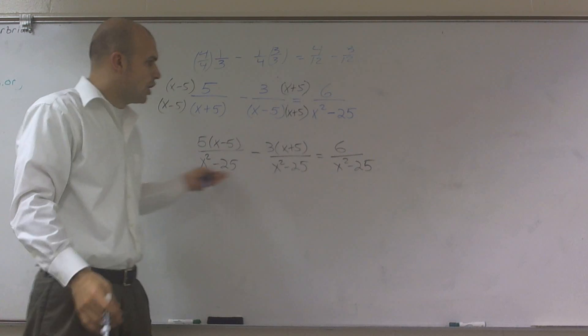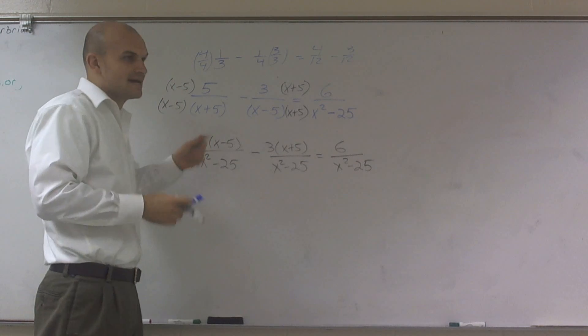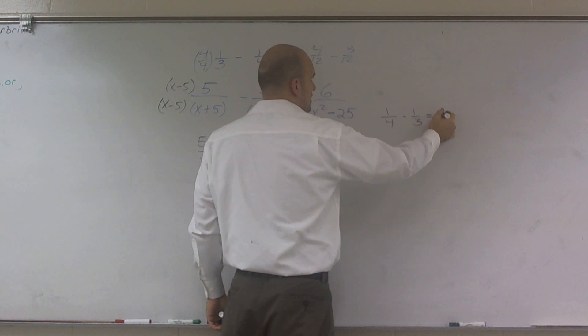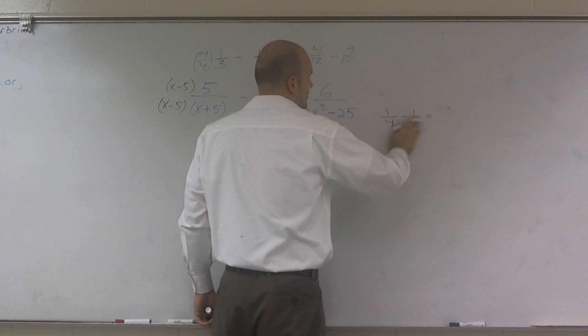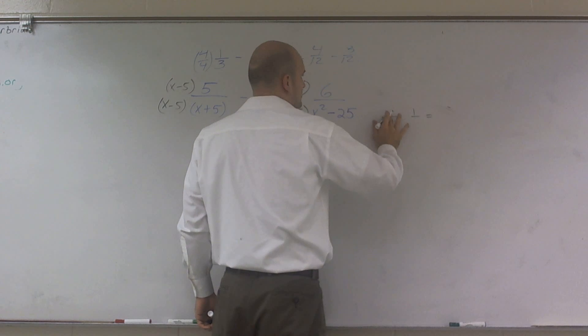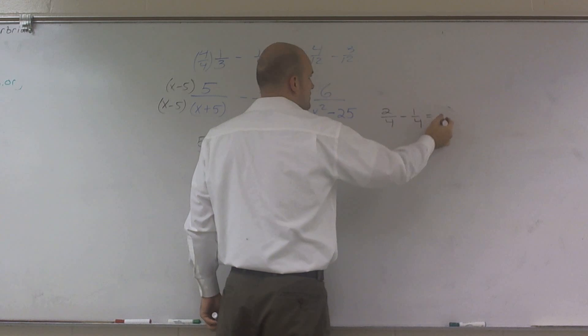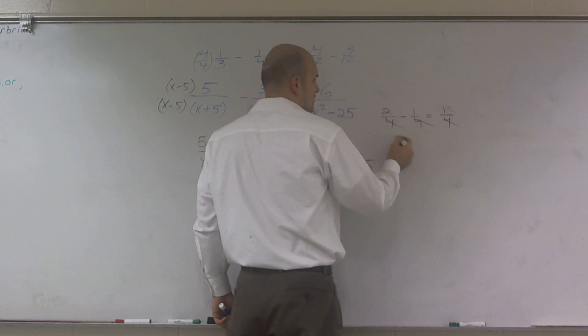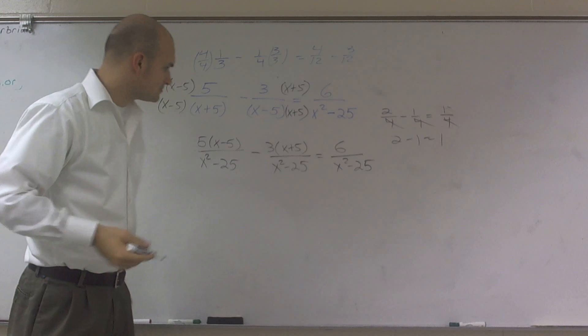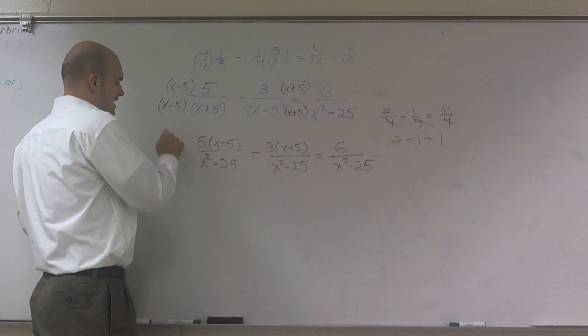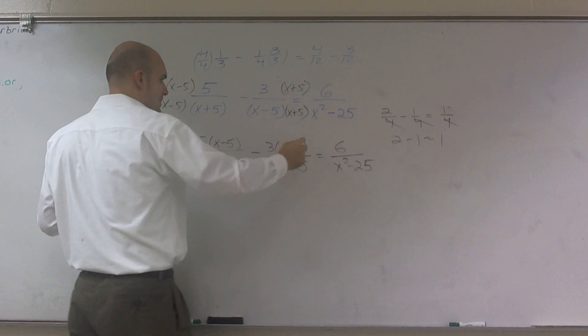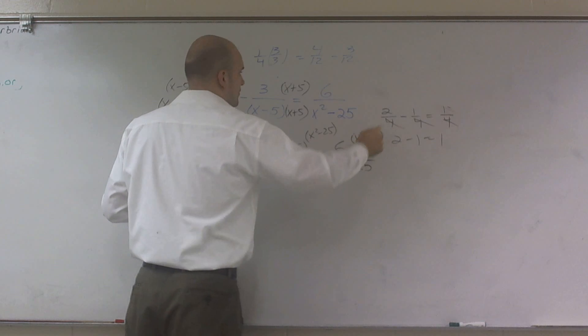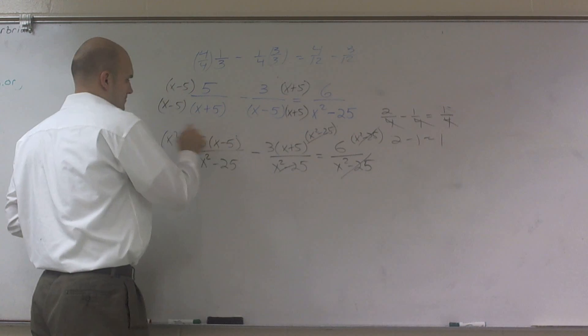So now, since these all have the same denominator, I can multiply them by that common denominator. Same thing, like if you had 2 fourths minus 1 fourth equals 1 fourth, you can just cancel all the fourths out, 2 minus 1 equals 1, right? So what I'm going to do here is I'm going to multiply everything by my denominator. And what you'll notice is these will all cancel out.